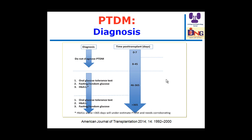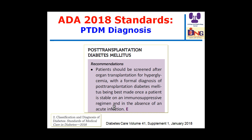An important consensus point concerns timing of hyperglycemia. If hyperglycemia occurs in the first week or first 45 days, do not diagnose post-transplant diabetes — it is considered transient hyperglycemia. If hyperglycemia persists beyond 45 days, this is post-transplant diabetes. The gold standard for diagnosis is the oral glucose tolerance test, or alternatively HbA1c, though HbA1c in the first year underestimates diabetes. After the first year, oral glucose tolerance test, HbA1c, or plasma glucose may be used.